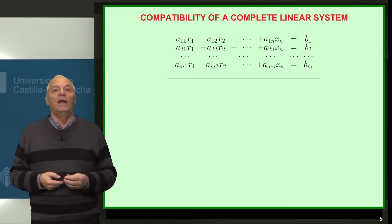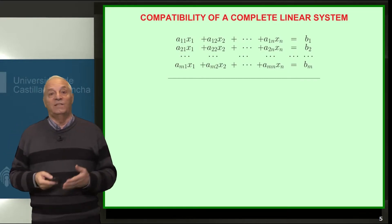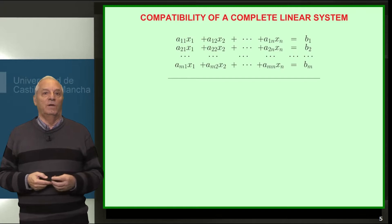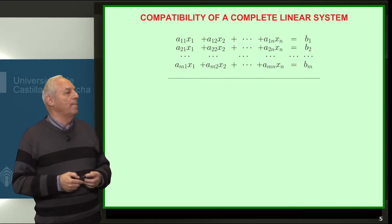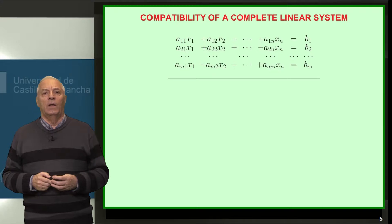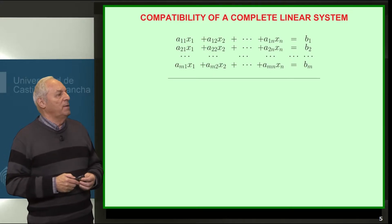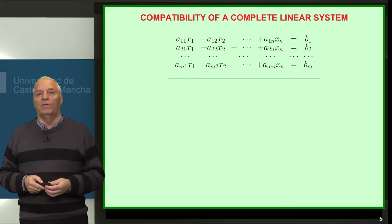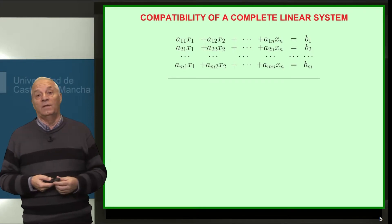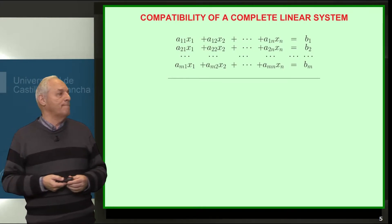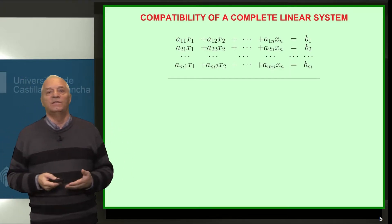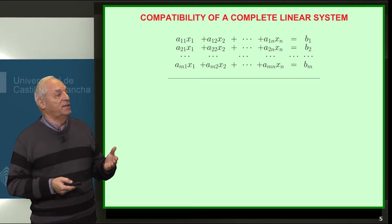The general solution is a particular solution, plus a linear subspace. Let's see how we pose the problem. Let's imagine that we have a complete system of equations, and we want to know what conditions the coefficients b1, b2, bn have to meet so that the system has a solution, assuming that the other coefficients are known.